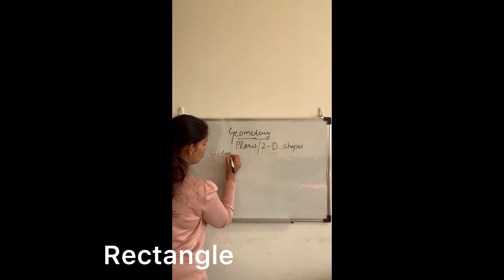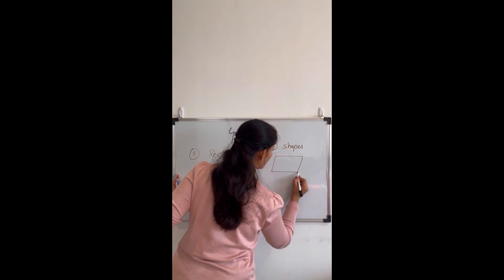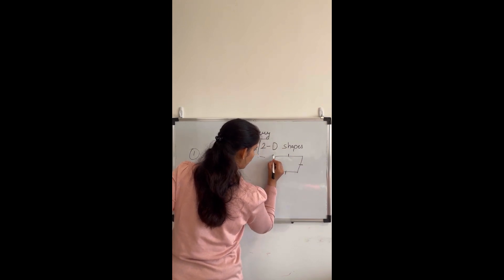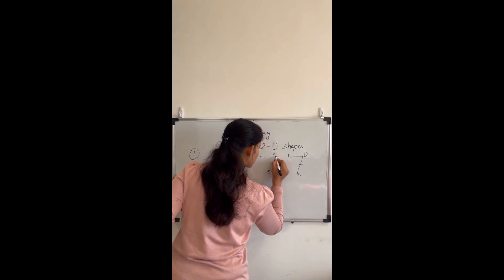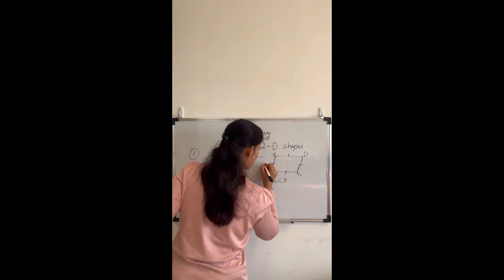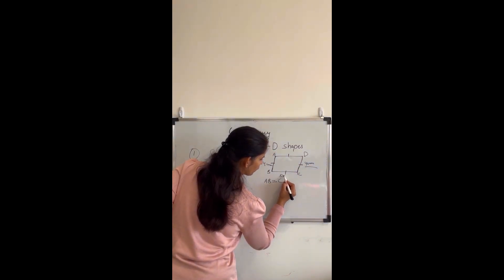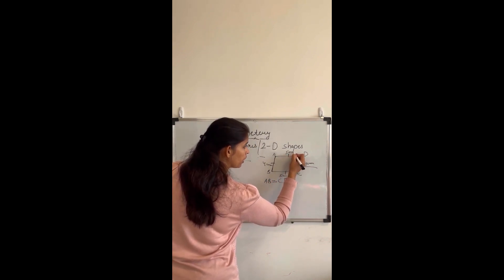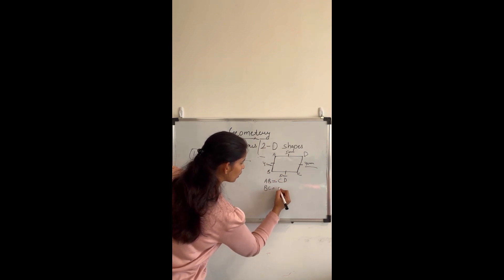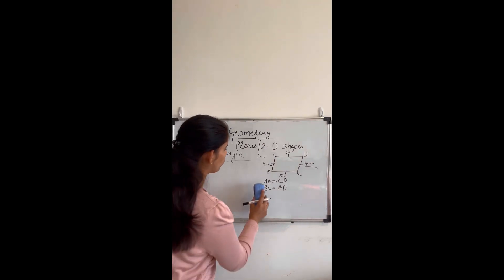The first shape is a rectangle. A rectangle has four sides — I'll name them A, B, C, and D. The property of a rectangle is that AB equals CD, and BC equals AD. So if one side is four centimeters, the opposite side is also four centimeters; if another is five centimeters, the opposite is also five centimeters.